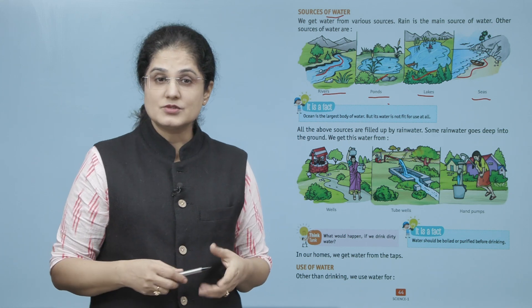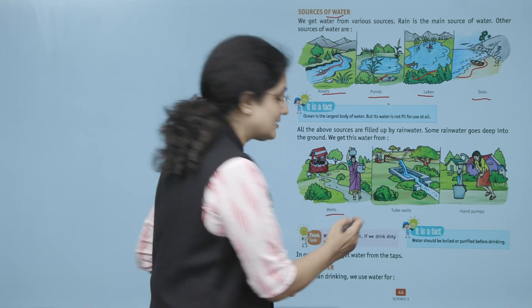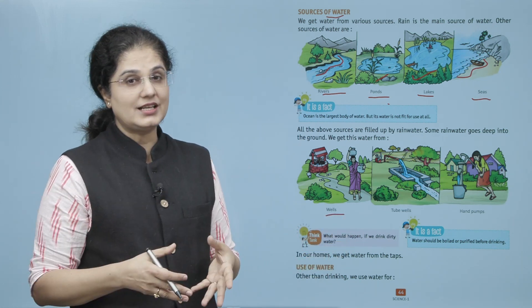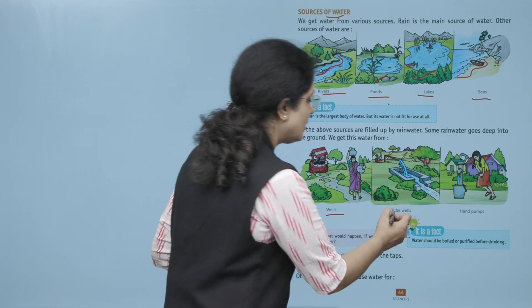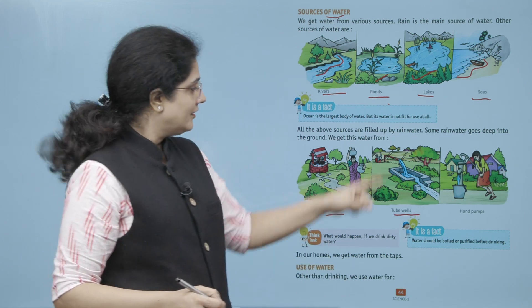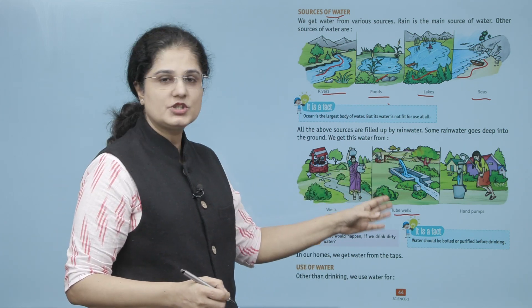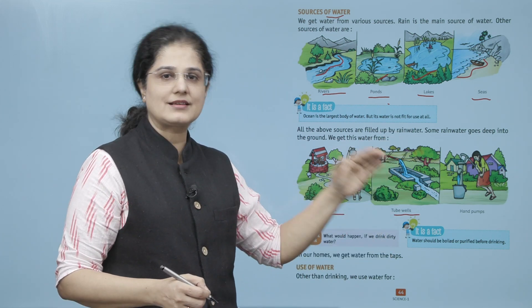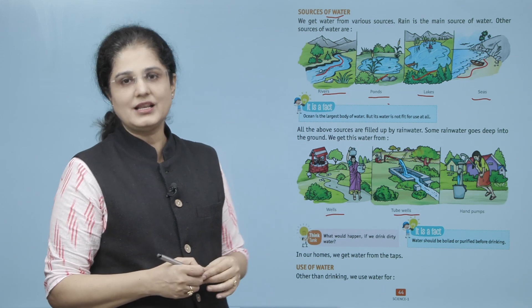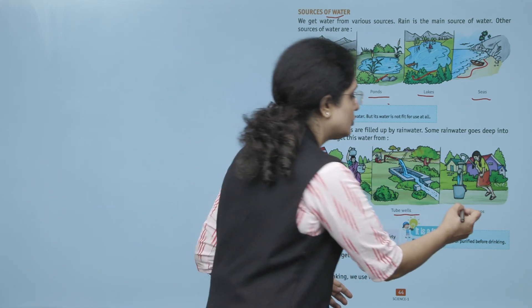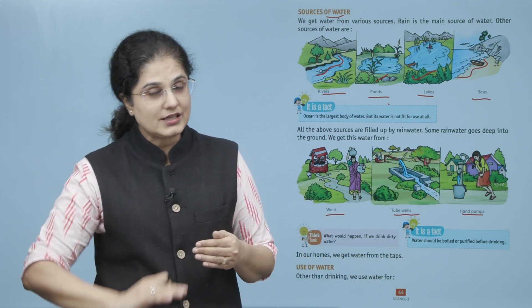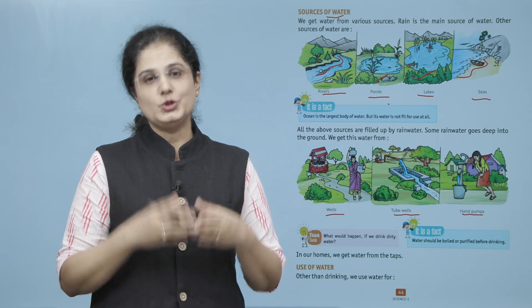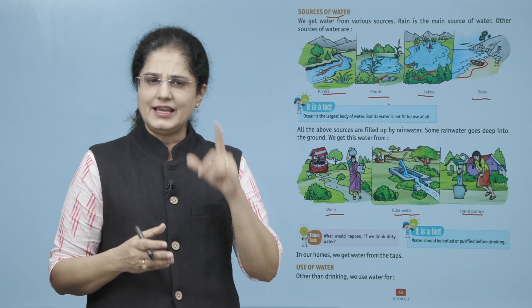So we get this water from wells. Joh paani zameen ke niche chala gya, woh ham kaise le sakte hai? Then also through hand pumps. Ye joh hand pump hai, iske through bhi joh ground water hai, zameen ke niche chala paani, usse use kar sakti hai.